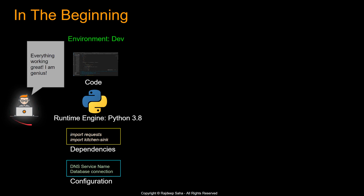You are the almighty happy developer and you develop some code for your project in a development environment. The runtime engine is Python 3.8 and you are importing a couple of dependencies — maybe requests and maybe kitchen sink. You also have a configuration file with the DNS service name and the database connection. Everything works great in the development environment.